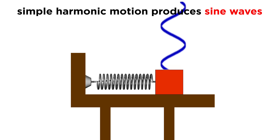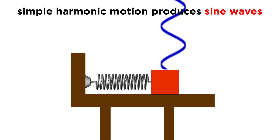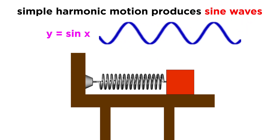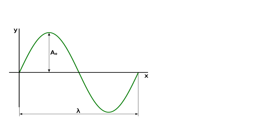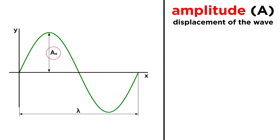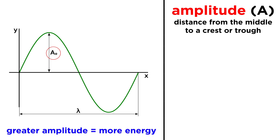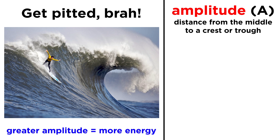A wave whose source is a vibration with simple harmonic motion will be a sine wave, because the periodic motion of the wave produces a graph of the trigonometric function Y equals sine X. We need to label a few details with sine waves. First, there is the amplitude of the wave. For a transverse wave like this, the amplitude is the displacement of the wave in the direction perpendicular to the direction of its motion, or the distance from the middle to a crest or trough. The greater the amplitude, the more energy the wave carries with it, which is why you shouldn't try to surf thirty-foot waves unless you are an expert.